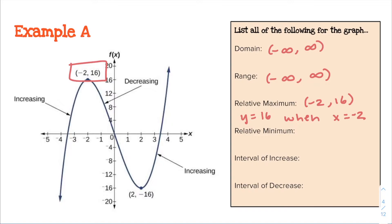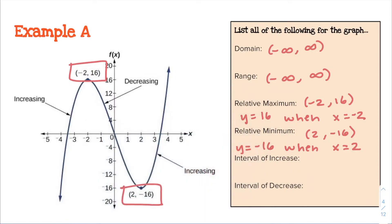Relative minimum is the bottom of a hill, so that's going to be the point (2, −16). Again, y equals negative 16 when x equals 2. Now here's the harder one — interval of increase and decrease — because it is all based on your x-axis. We're describing where the graph has a positive slope in interval notation in terms of x, and where it has a negative slope.